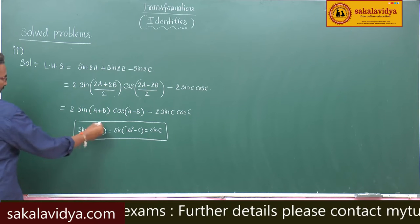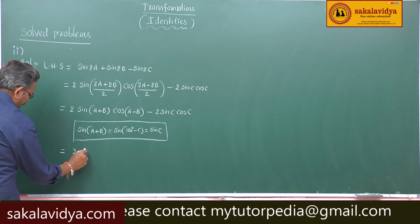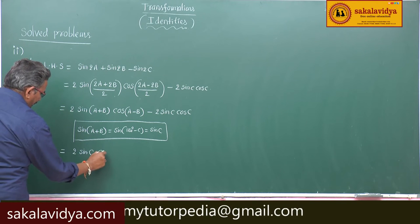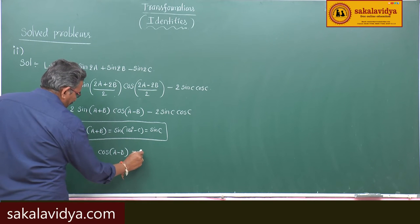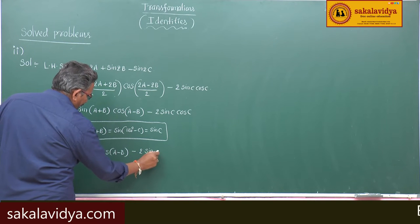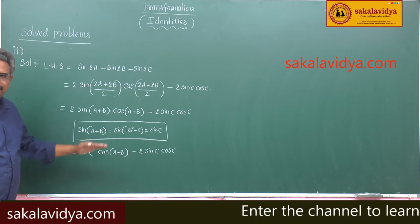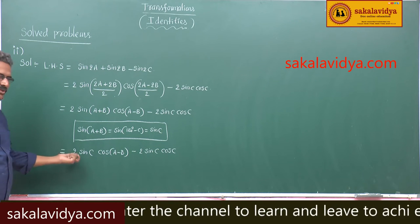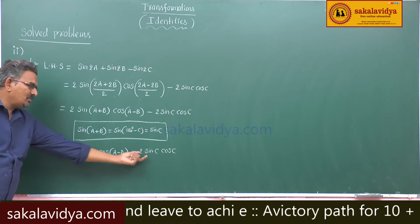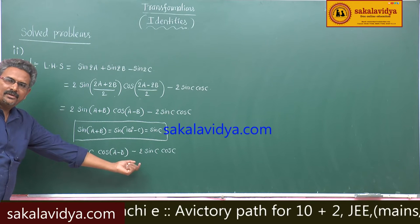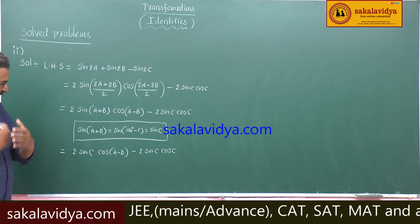Now, sin(a+b) is replaced by sin(c), giving us 2·sin(c) into cos(a-b) minus 2·sin(c)·cos(c). Observing the two terms, we see that 2·sin(c) is the common factor in both terms. Shall we take 2·sin(c) out as a common factor? Yes, let us take it.